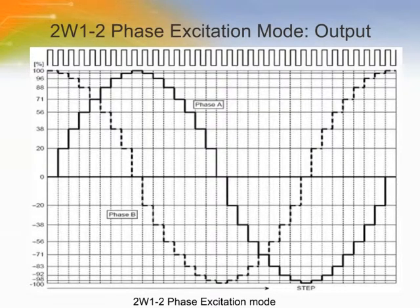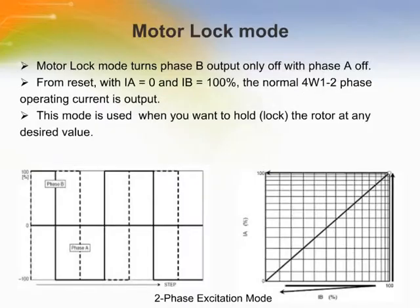Two-phase excitation has large load change due to motor induced electromotive force. If a mode in which the current attenuation capability is small is used, current increase due to induced electromotive force may not be suppressed. In such a case, use a mode in which the mixed decay ratio is large. Keep phase B on and phase A off if you want to hold the rotor at any desired value.